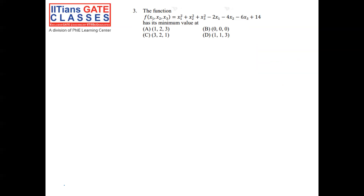Coming to the next question, which is from the maxima and minima topic of calculus. They are asking for the minimum value of the function f(x₁, x₂, x₃) = x₁² + x₂² + x₃² - 2x₁ - 4x₂ - 6x₃ + 14. We need to find at which point we get the minimum value.